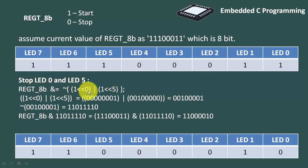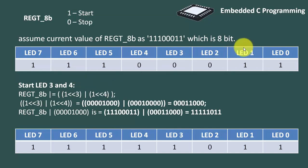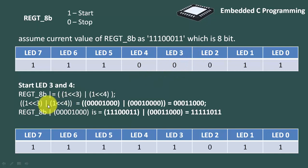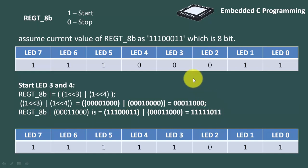Similarly, to turn on LED 3 and LED 4, I make bit 3 and bit 4 equal to 1 using: (1 << 3) | (1 << 4). The OR of these two shifts gives a mask where LED 3 and LED 4 are 1 and all others are 0. ORing this mask with the current register content turns on LED 3 and LED 4 without altering the status of any other bit.